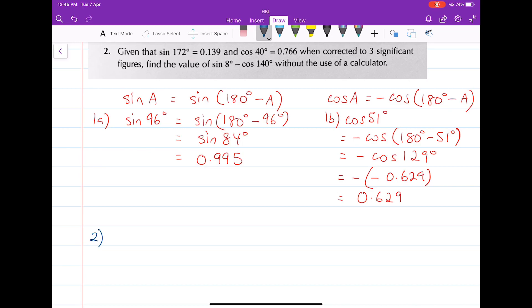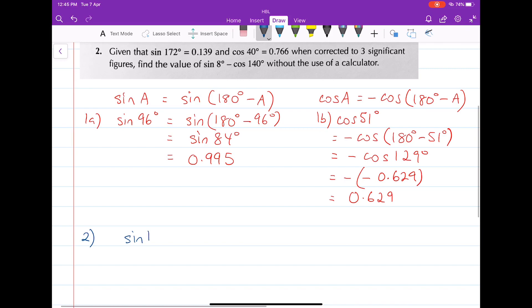Let's consider question 2. Now what's given is sine 172 degrees is equals to 0.139 and cosine 40 degrees is equals to 0.766. And you're supposed to find the value of sine 8 degrees and then minus cosine 140 degrees.